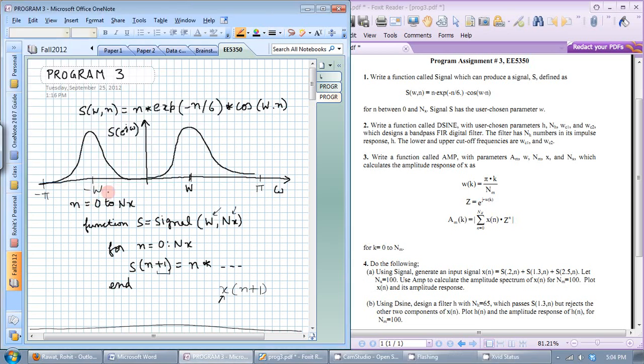In program 3 we do FIR filtering. The first step is to produce an input function. This is the equation for the signal given to us. Omega is a fixed parameter and n is the time.